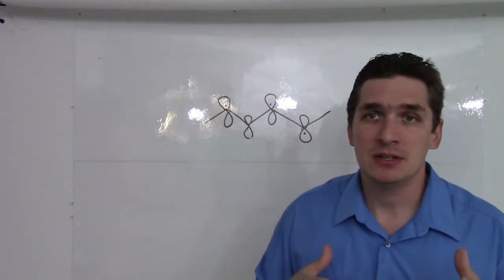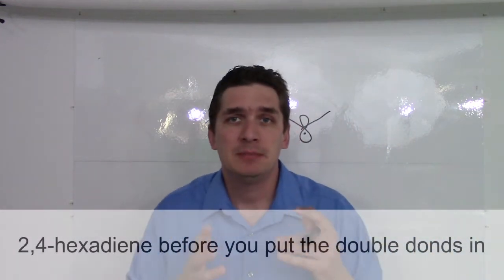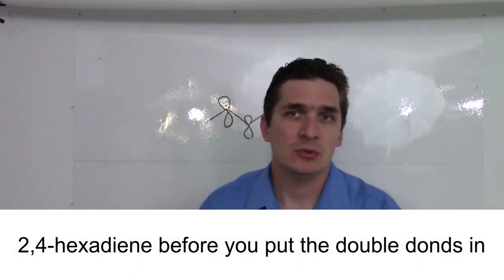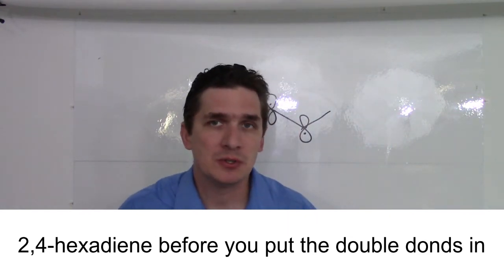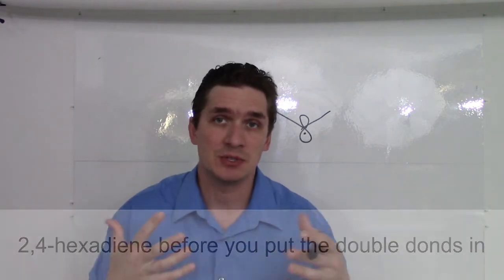So, let's look at our hexadiene before we put the electrons in. Now, an important aspect of molecular orbital theory is that the number of molecular orbitals equals the number of atomic orbitals. So, the number of molecular orbitals you can generate equals the number of atomic orbitals that you start with.